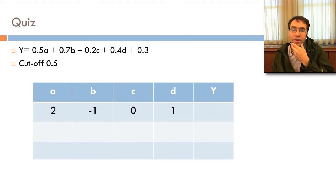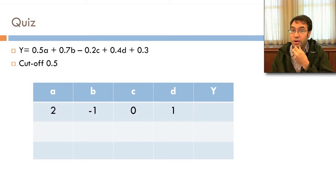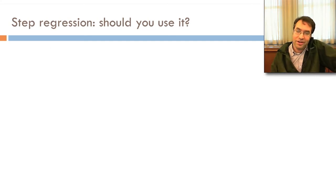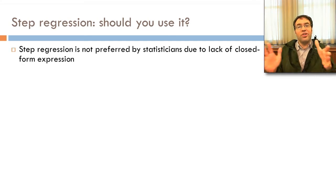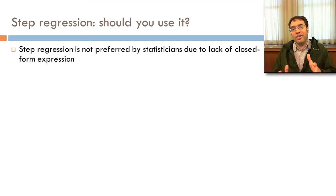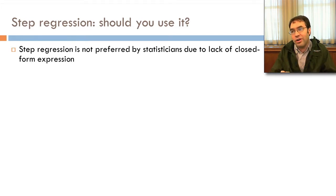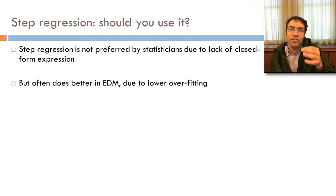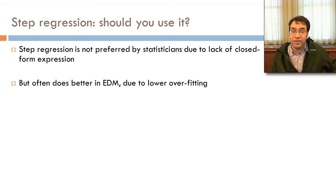What if we have 2, negative 1, 0, and 1? Let's try a quiz. Step regression — should you use it? I like it. Some statisticians don't like step regression due to the lack of a closed-form expression, which makes it hard to compute things like standard errors. But it often does better in data mining because it's very conservative and it doesn't tend to overfit.